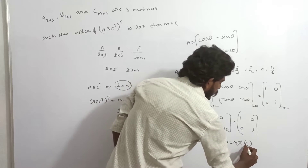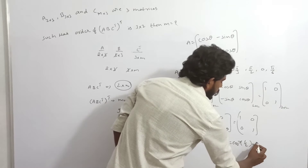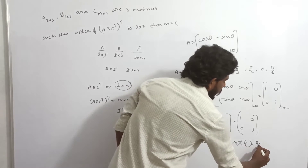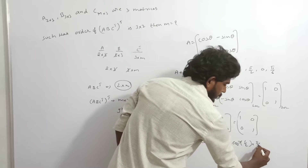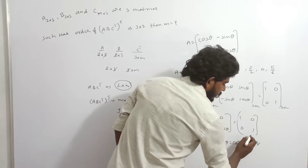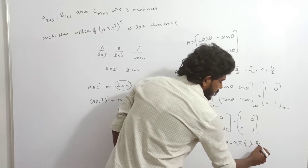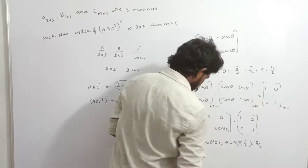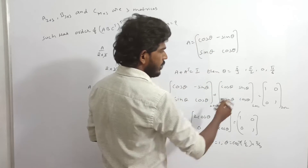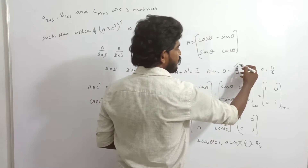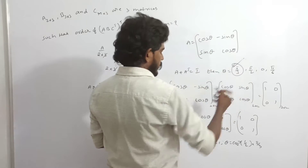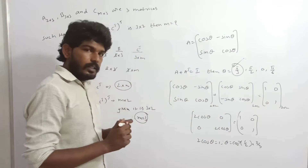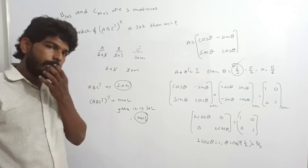So cos theta equals one half. Therefore theta equals cos inverse of one half. That gives theta equals pi by 3, or 60 degrees. So theta is pi by 3.